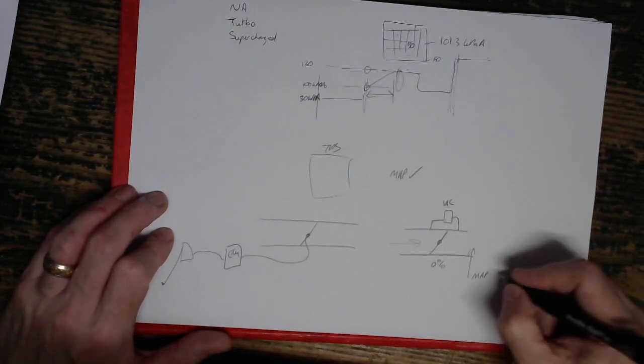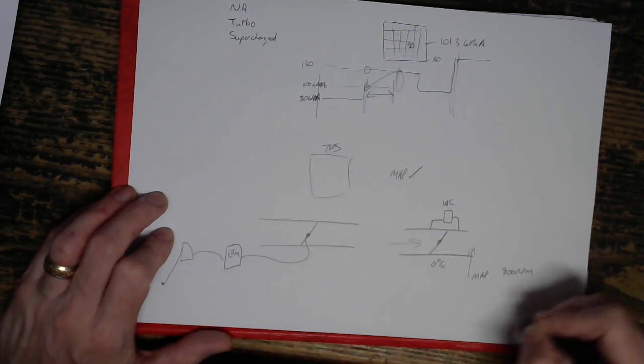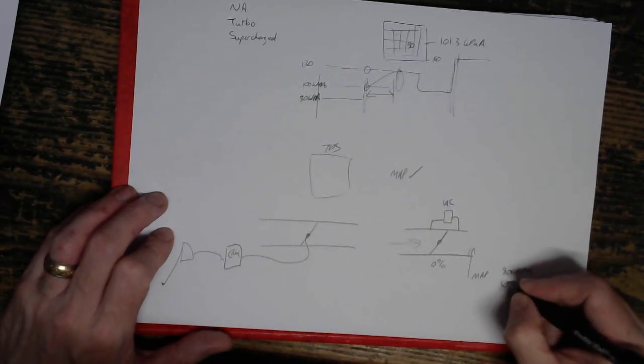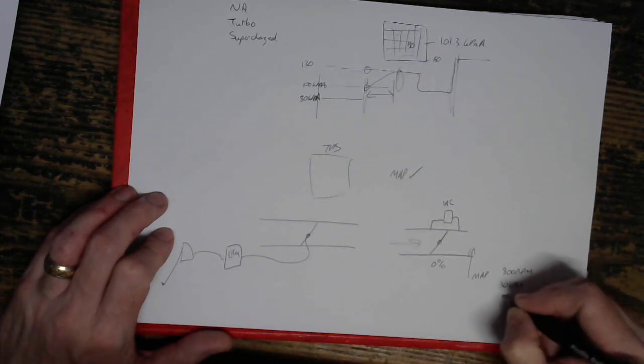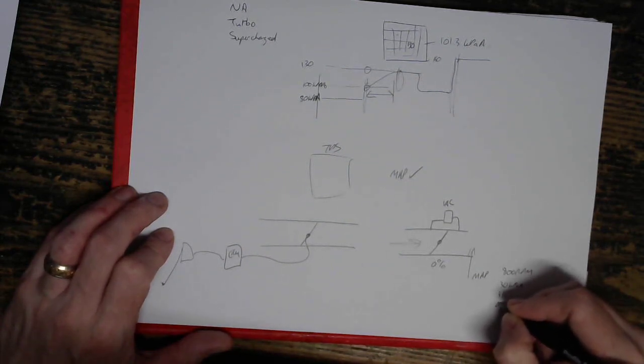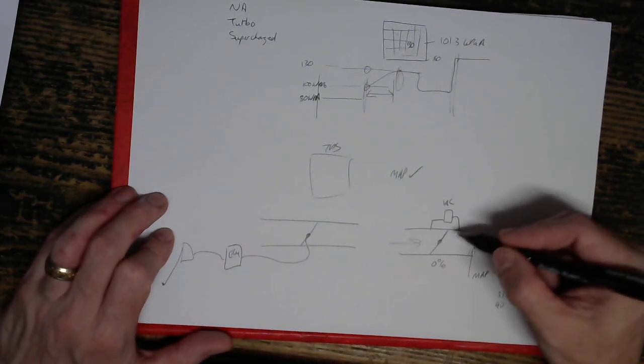The manifold pressure at, say, 800 RPM might be 30 kPa, or it might be 33, or it might be 40, depending on how much throttle bypass you've got here.